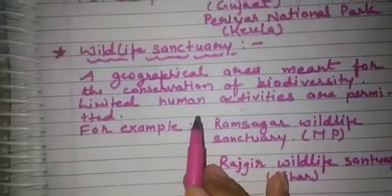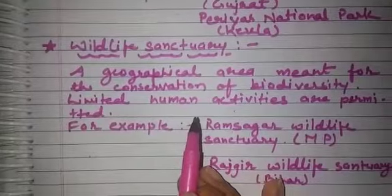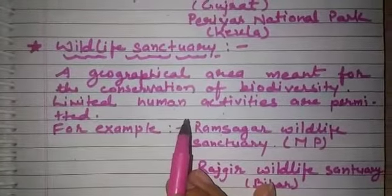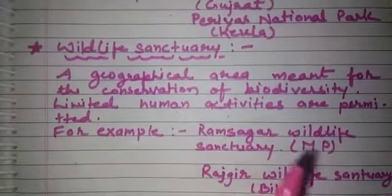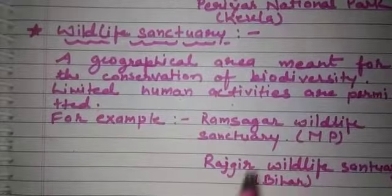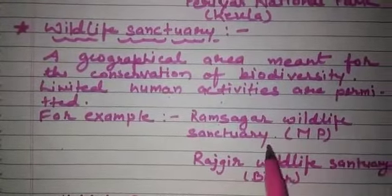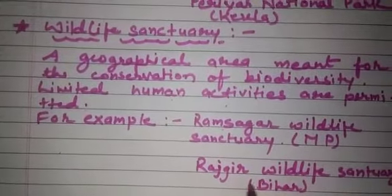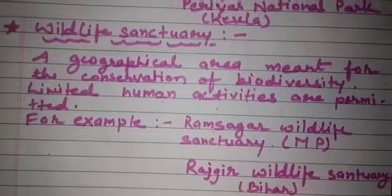The UNESCO has selected Manas Wildlife Sanctuary of India as a World Heritage Site. Some other examples are Ramsagar Wildlife Sanctuary and the Rajgir Wildlife Sanctuary.